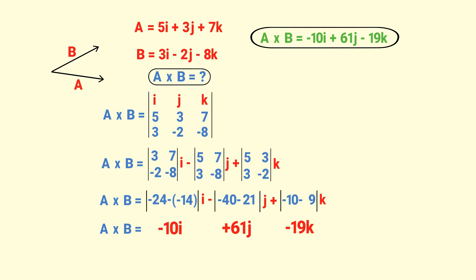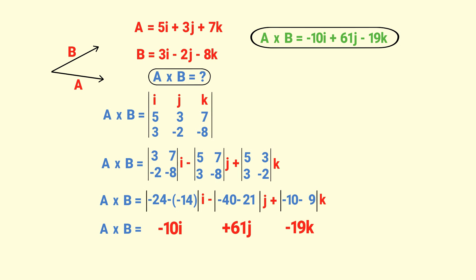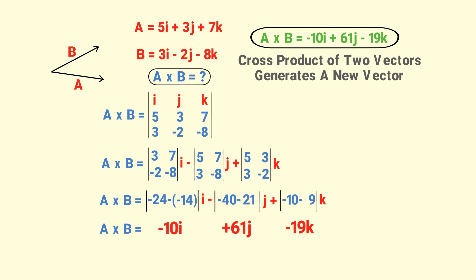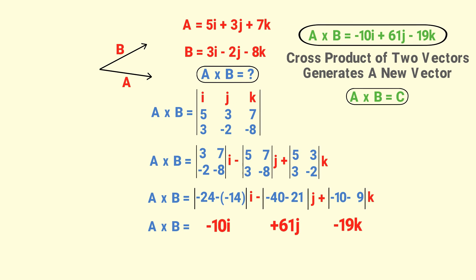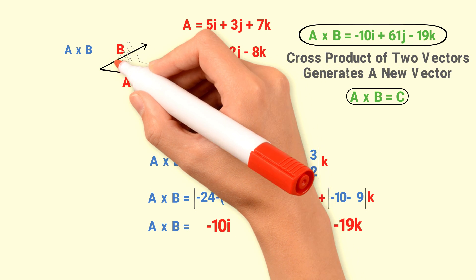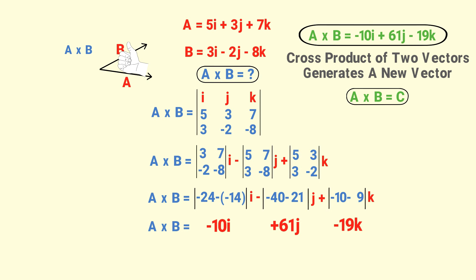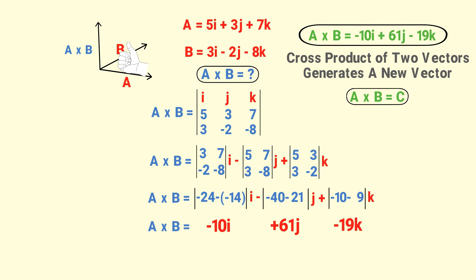From this example, we also learn that the cross product of two vectors A and B equals a new vector — you can say that A cross B generates a new vector C. Regarding the direction of vector C: for A cross B, curl your right hand fingers from A towards B. The thumb of your right hand points in the direction of vector C, which is outward or upward. By the right-hand rule, we can easily find the direction of A cross B.